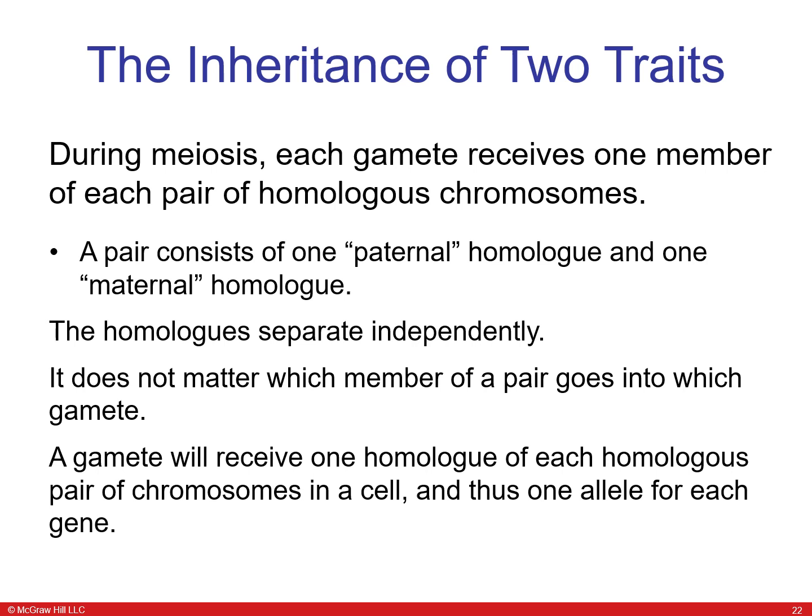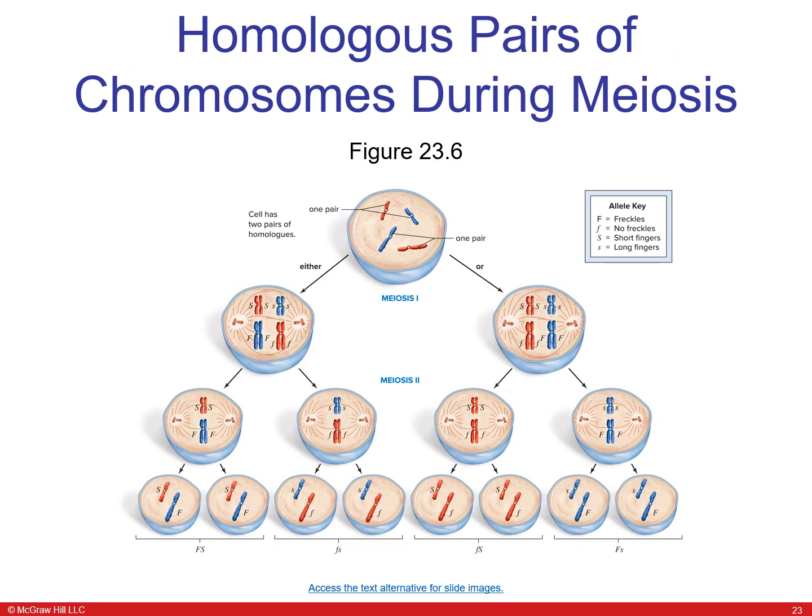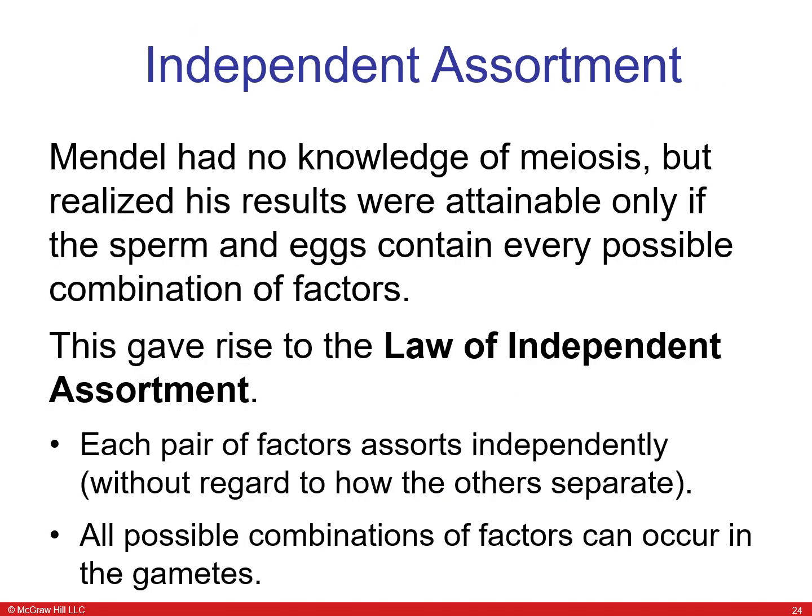During meiosis, each gamete receives one member of each pair of homologous chromosomes — one from the mother and one from the father — and they separate independently. A gamete will receive one homolog of each homologous pair and thus one allele of each gene. Mendel realized his results were attainable only if sperm and eggs contained every possible combination of factors, giving rise to the Law of Independent Assortment: each pair of factors assorts independently and all possible combinations can occur in the gametes.